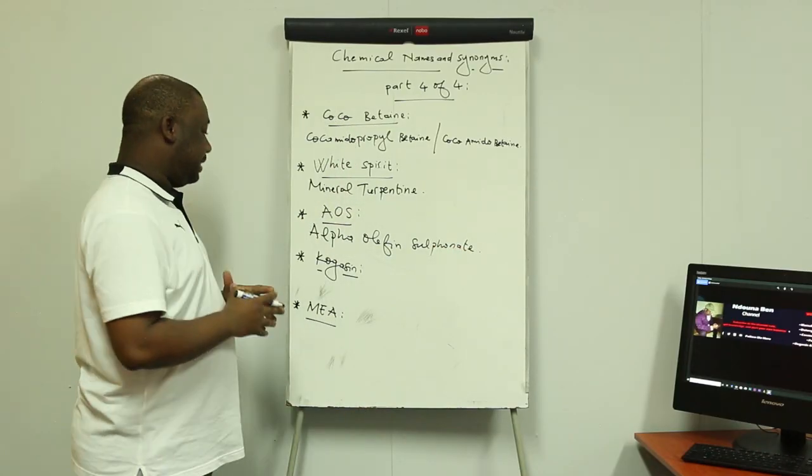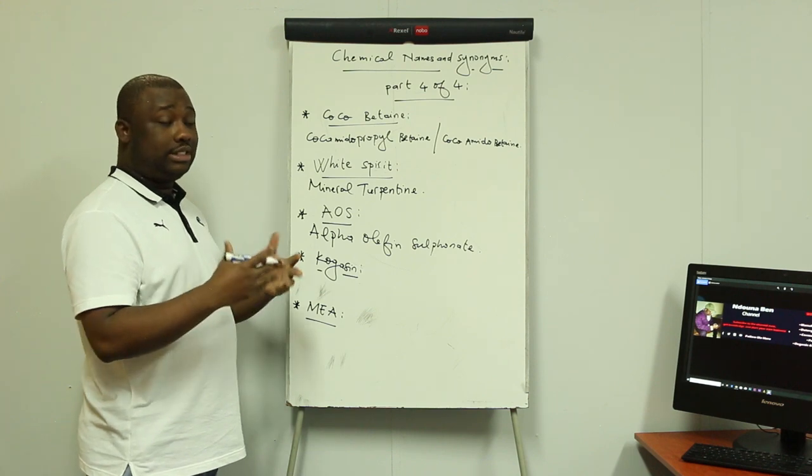The next chemical is kogasin. What is the other name of kogasin? The other name of kogasin is odorless kerosene.